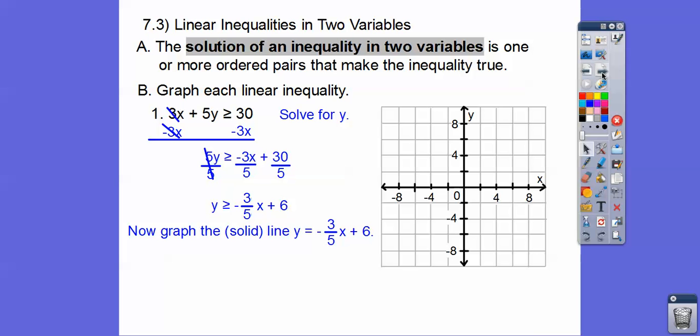There's that. And it's going to be a solid line, you guys. So we're going to graph the line y = -3/5x + 6. And it's a solid line because there's an equals bar right there. If it was just greater than, it would be a dotted line or a dashed line, as this textbook likes to say.